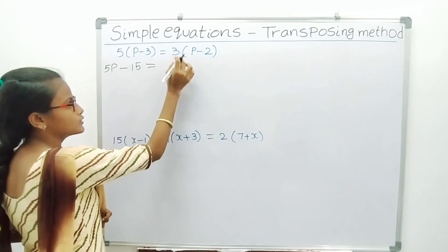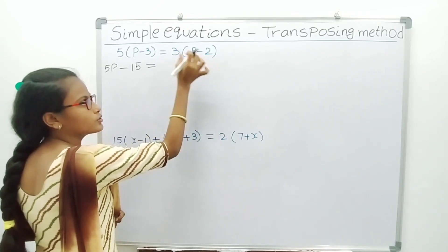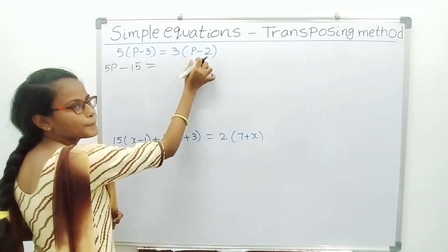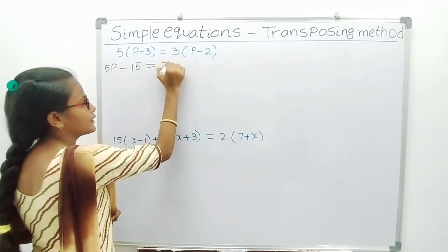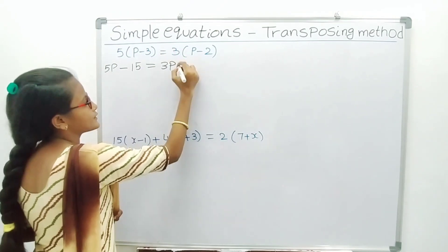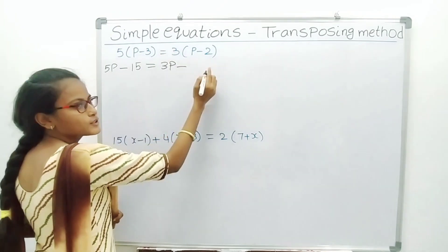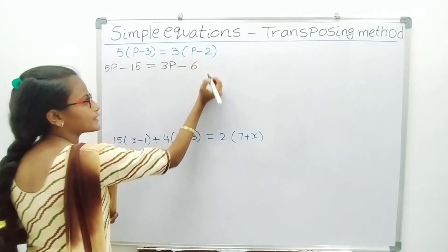It is equal to 3 of (P minus 2). 3 into P is 3P. Plus into minus gives minus; 3 into 2 is 6.